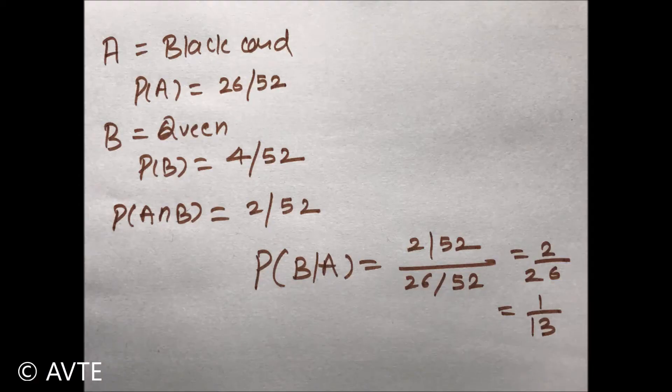So the probability of getting a queen given that a black card is happening is 2/52 divided by 26/52, which is 2 over 26, and hence 1 by 13. By listening and reading the question, breaking it into events, identifying which is a pure event and which is a dependent event, one could easily get the answer. Thank you very much.